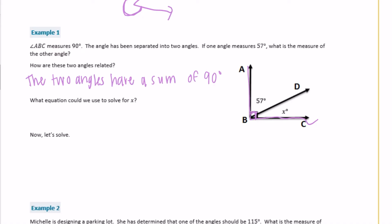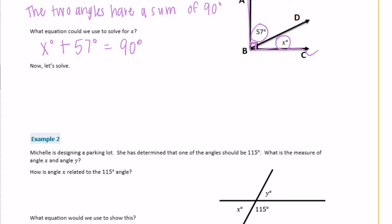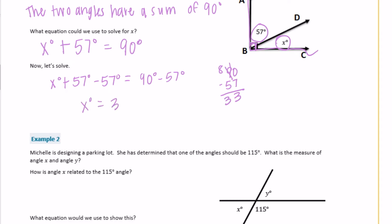What equation could we use to solve for x? We know that x degrees plus 57 degrees together equal 90 degrees. So if we have x degrees plus 57 degrees, we just need to get rid of the 57 degrees to get x alone. That would be equal to 90 degrees minus 57 degrees, and 90 minus 57 would be 33 degrees. So x is equal to 33 degrees — the unknown angle is 33 degrees.